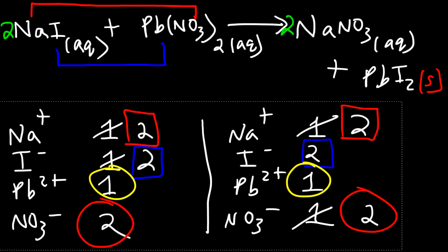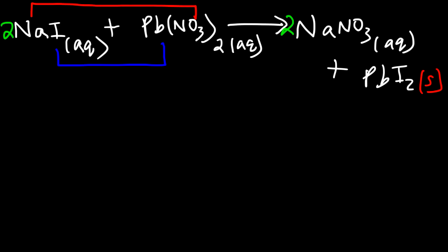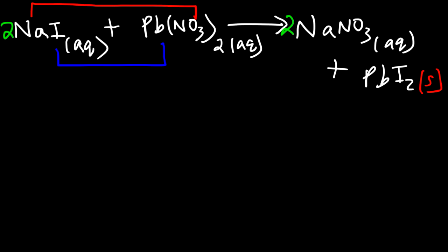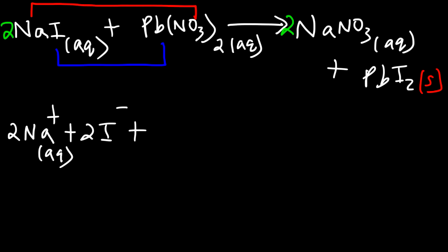The next step is to convert the molecular equation into the total ionic equation. In this step, everything in the aqueous phase needs to be separated into ions. Everything else — in the solid, liquid, or gas phase — you leave as is. So sodium iodide, we split it into two sodium ions and two iodide ions. Each of these should be labeled aqueous, but I'm running out of space.